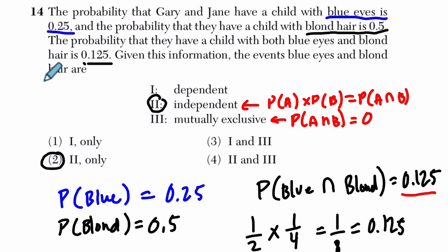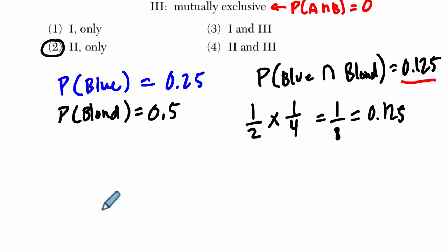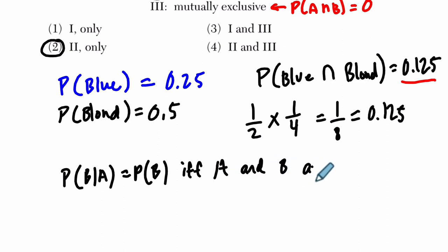Now, if you don't like solving it that way, another nice way to think about it usually is based on this idea that the probability of B given A equals the probability of B if and only if A and B are independent.